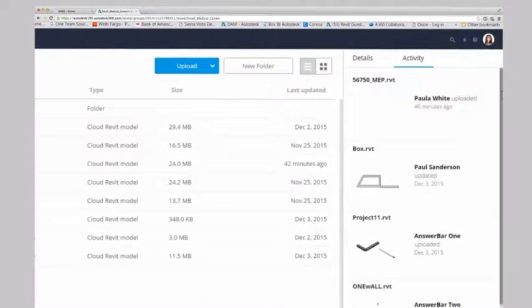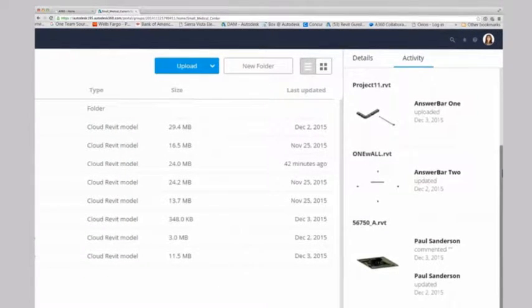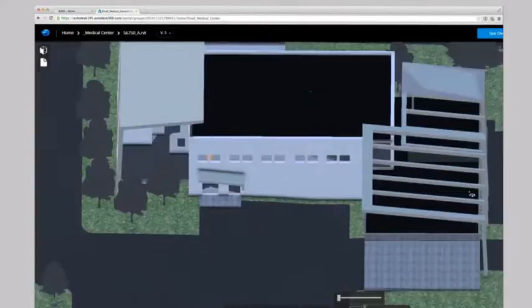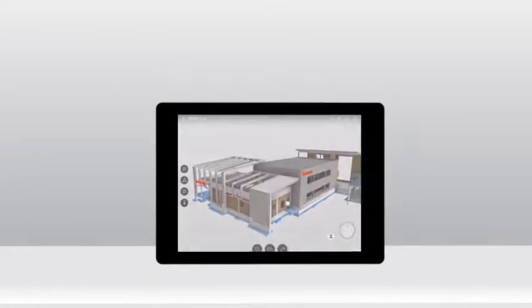Even non-designers can use a web browser or mobile device to track what's happening in the activity stream, search for any component, or view the model. And all this is available from your desktop, tablet, or smartphone.